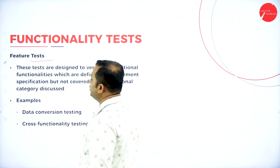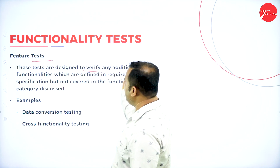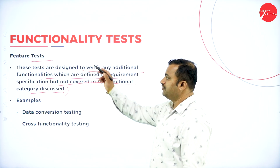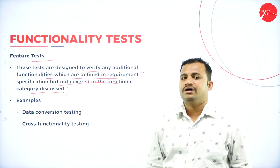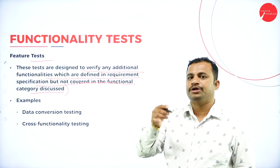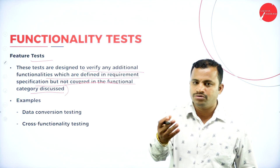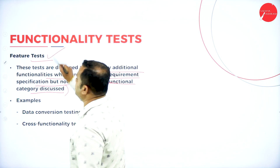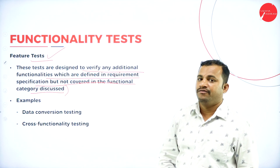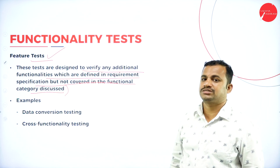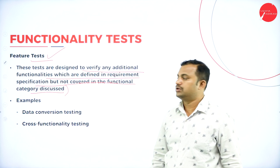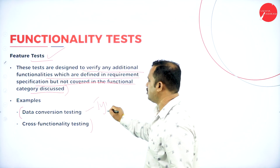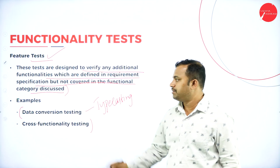The feature test includes tests designed to verify any additional functionality which is defined in the requirement specification but not covered in the functional category discussed. Suppose in any iterative SDLC methodology, any new functionality needs to be incorporated — if it is missed, it has to be incorporated again with the help of feature testing. Feature testing helps cross-verify whether the newly requested requirement is incorporated into the existing system and delivered to the stakeholder. Examples include data conversion testing and cross-functionality testing, also called typecasting.